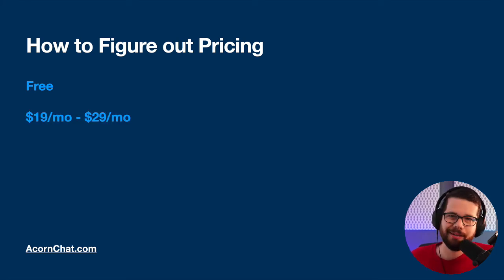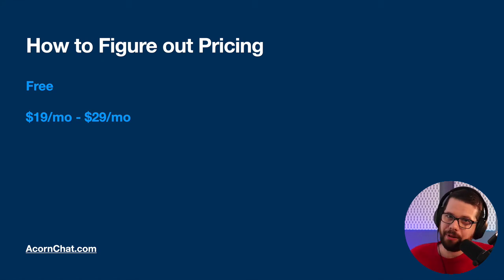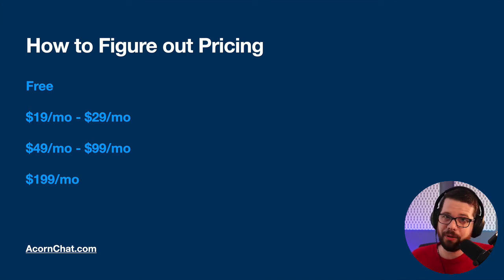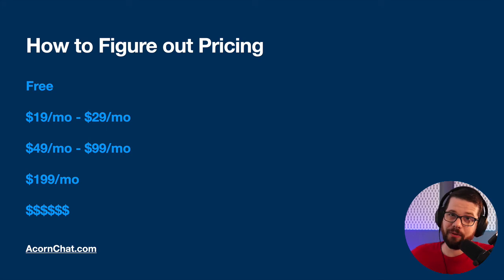The next tier up is about $19 to $29 a month, which is about the level I'm at right now. But beyond that there's a $50 to $100 a month plan, then a $200 a month plan, and past that is something like Intercom, which gets very expensive.